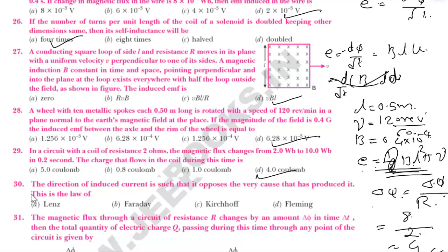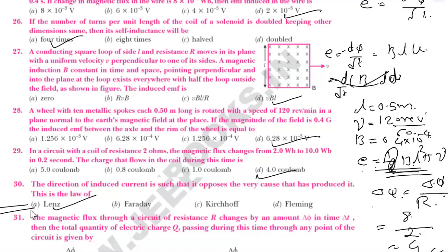The direction of induced current is such that it opposes the very cause that has produced it. That law is known as Lenz's law.